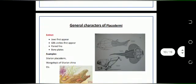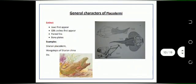Moving towards the general characters of Placodermi. The class is extinct but they used to have bony plates, paired fins, jaws and gill arcs were used to appear first. Some examples of Placodermi are Vangolepis of Silurian China and Silurian Placodermi and etc.